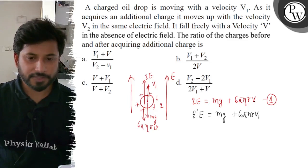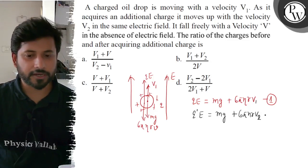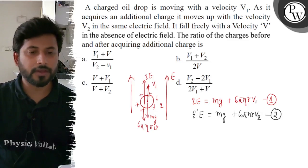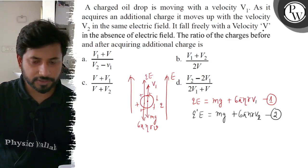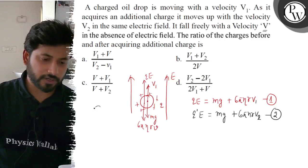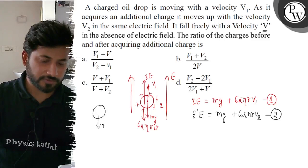If we have electric field, this is free fall velocity V. In free fall, the downward force is mg and the upward force is 6πηRV, so mg equals 6πηRV.